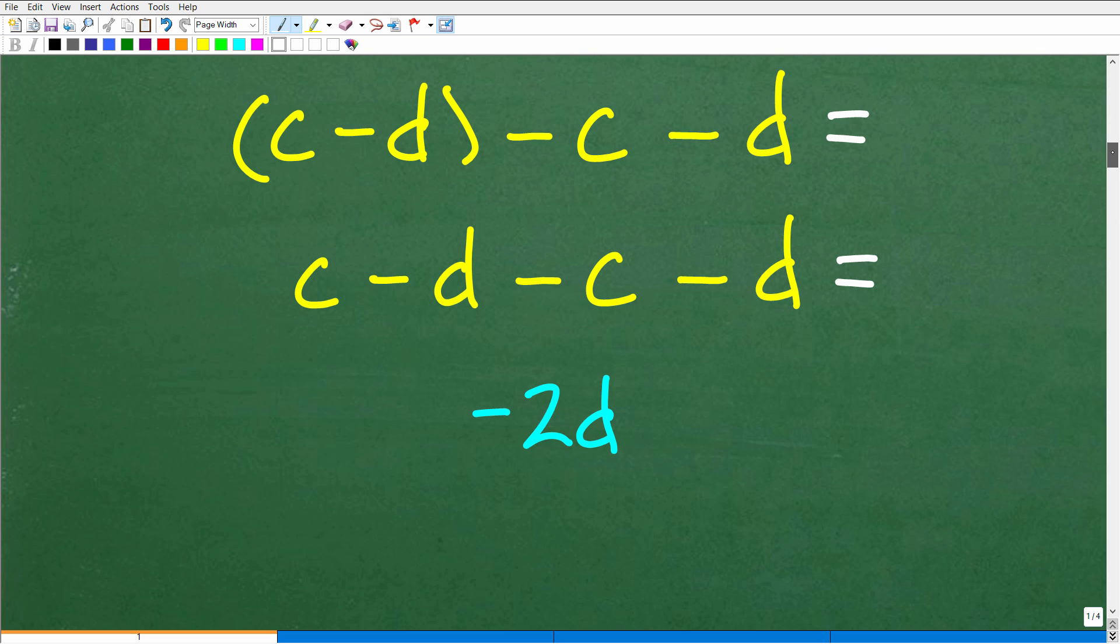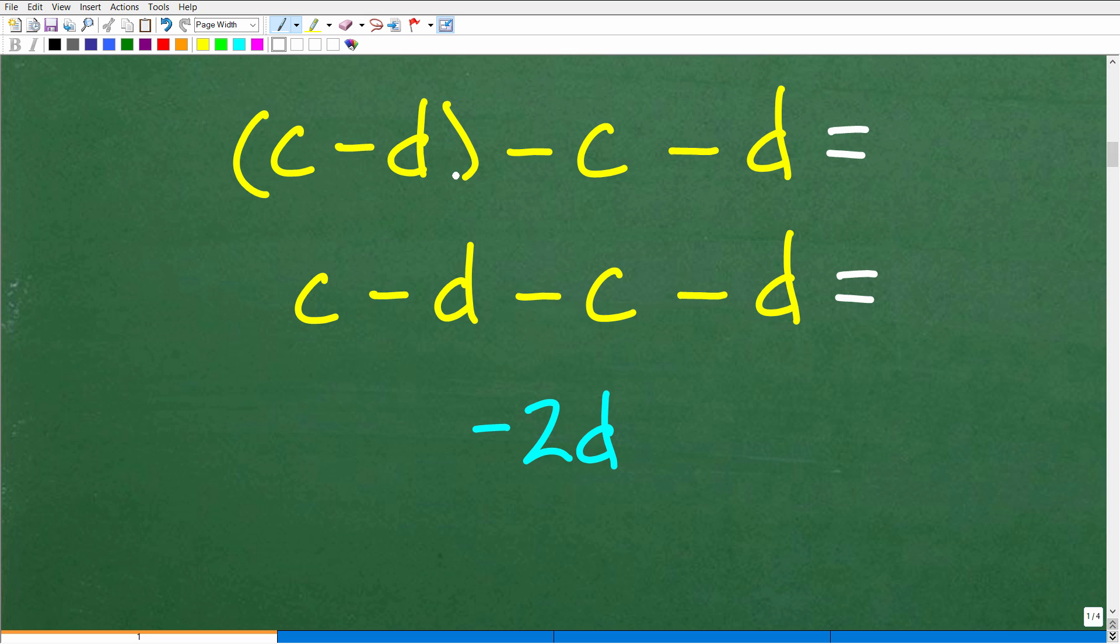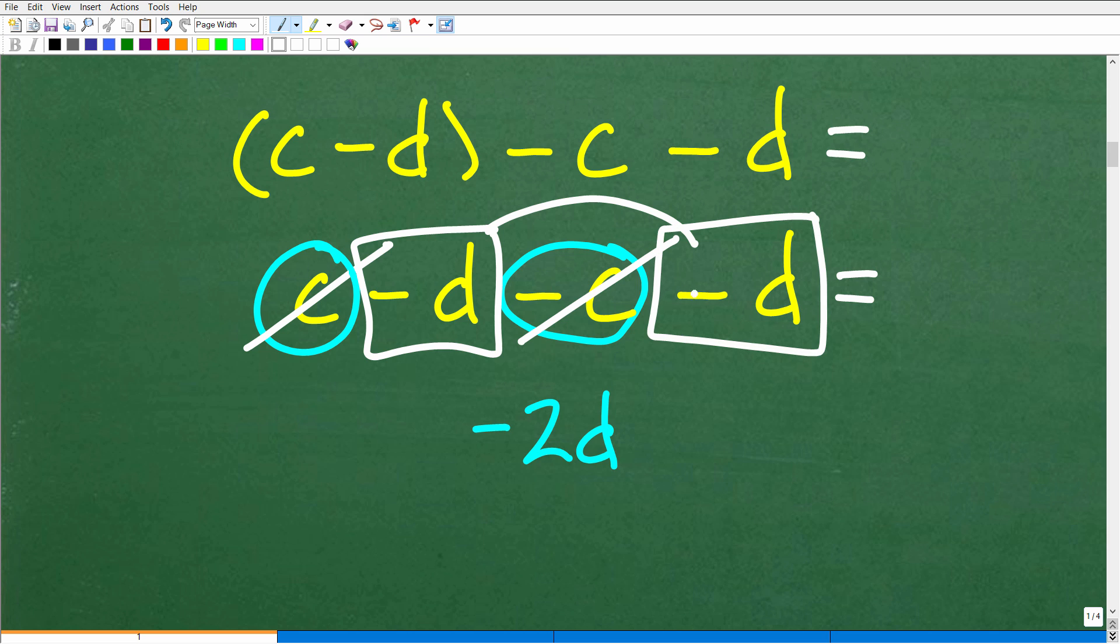So what do I do now? At this point, you might be saying there's still some parentheses over here. Well, there's nothing here to do. This is just a variable expression. So you can drop the parentheses. Now we're down to C minus D minus C minus D. Let's take a look at what we have here. I have a C here and a negative C here. So those are going to cancel each other out. C minus C is zero. And I'm left with negative D plus another negative D. So how many negative Ds do I have? I have negative 2D.